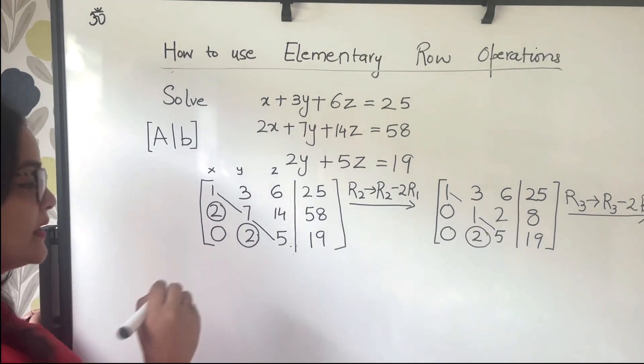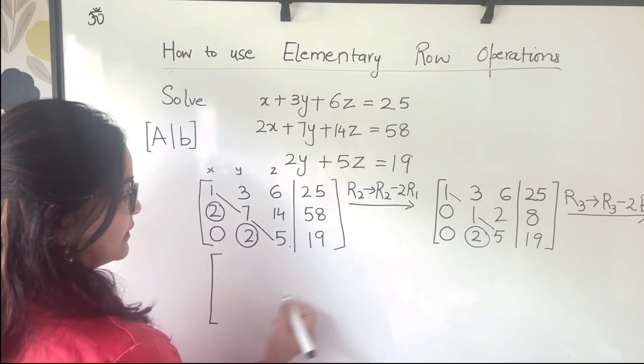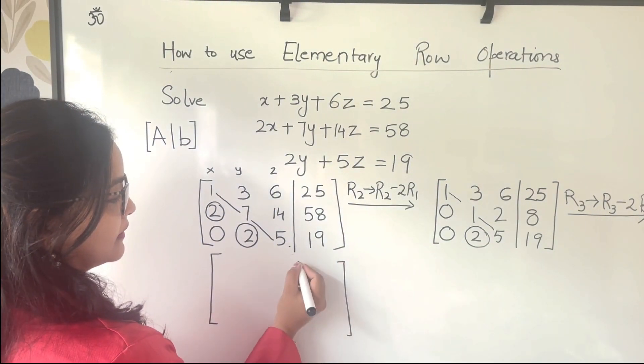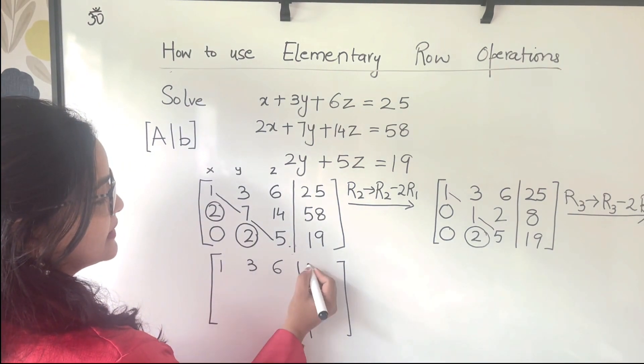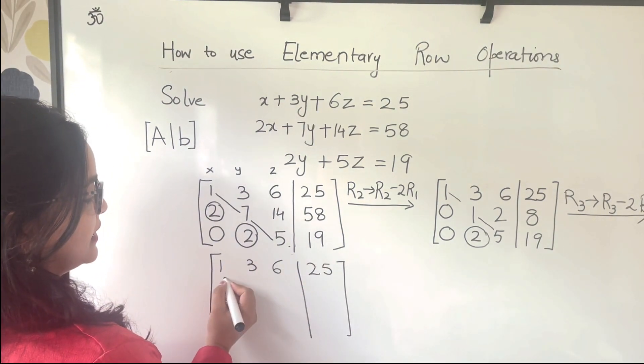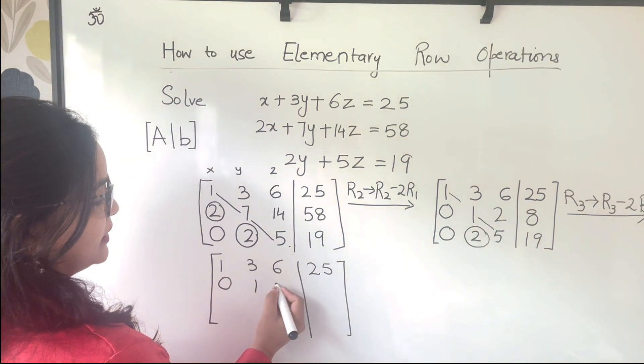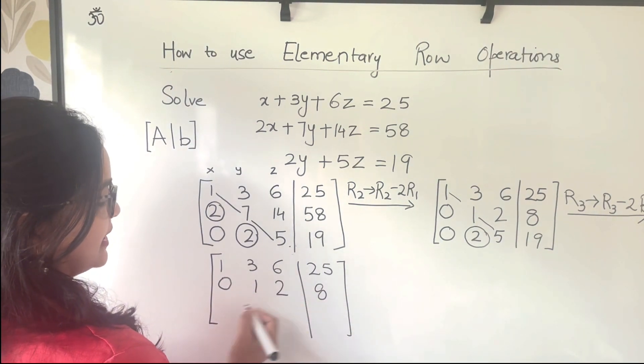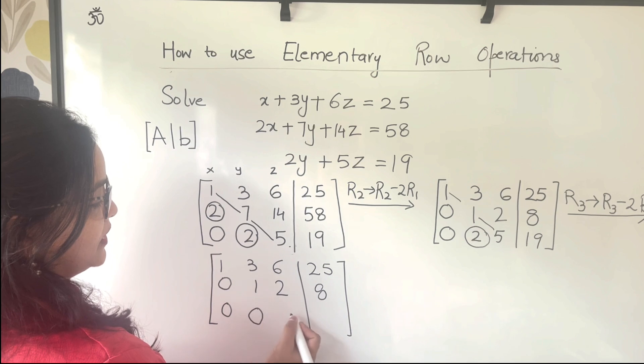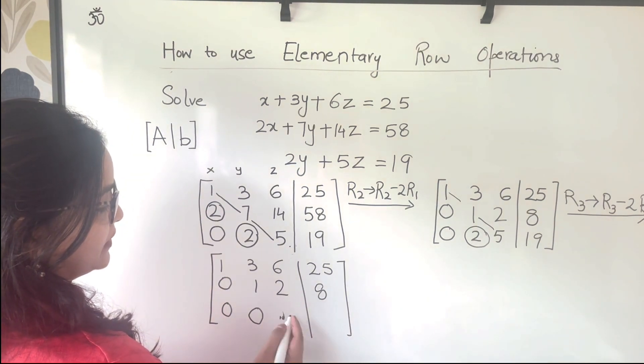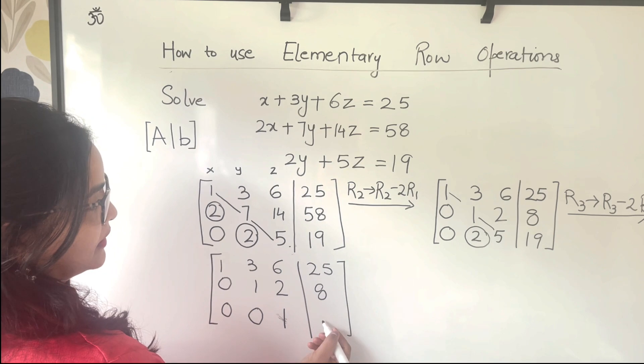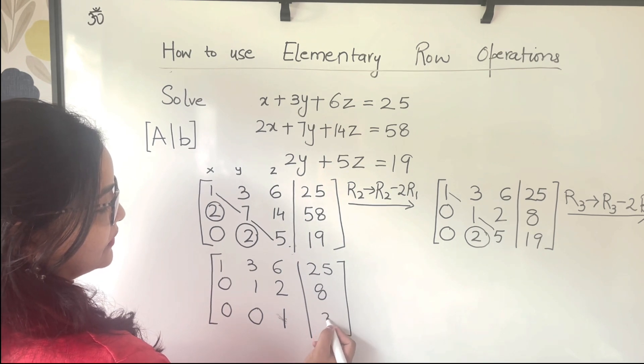And that gives us 1, 3, 6, 25 as it is. 0, 1, 2, 8 as it is. 0, 0, 5 minus 4 gives you 1 here, and 3 here.